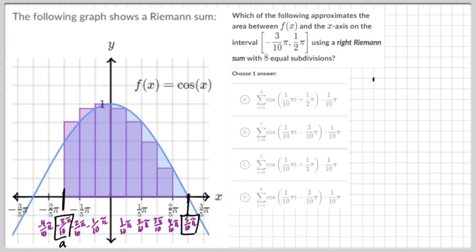The pictures are all drawn for us. We can see that each height of the rectangle is determined by the right side of the rectangle. Before I start looking at answers, let's see if we can do it ourselves.